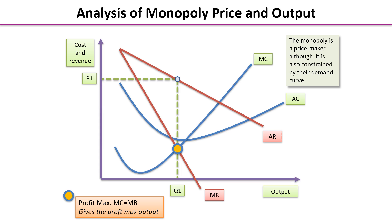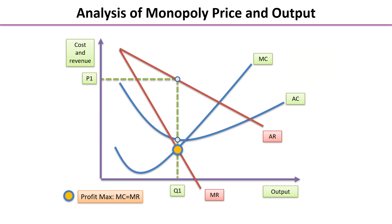We're going to show how this firm makes supernormal profit. We now know the average revenue or price. We need to find out what the average cost is so we can work out the profit per unit. We put in the cost C1, coming off the average cost curve.